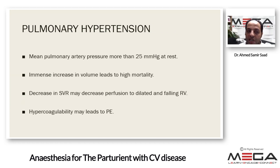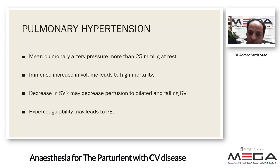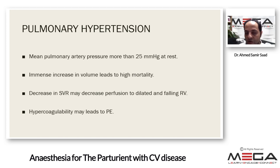For pulmonary hypertension — diagnosed when mean pulmonary artery pressure is more than 25 mmHg at rest — increased volume may cause high mortality by burdening the right side of the heart, worsening the condition. Fluid management must be considered carefully. Decreasing systemic vascular resistance may decrease perfusion to a dilated failing heart. Hypercoagulability may lead to pulmonary embolism, which can be fatal even if mild in a patient with pulmonary hypertension.